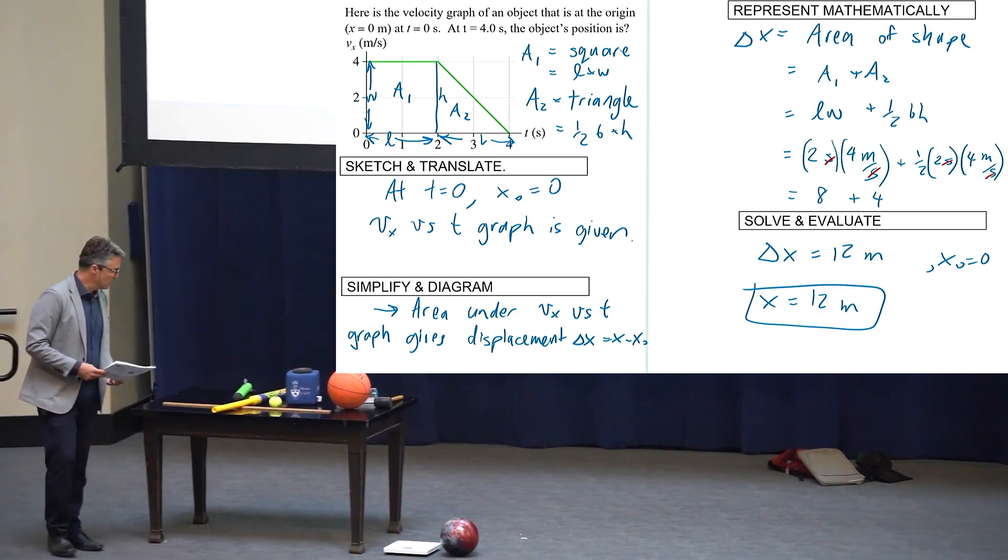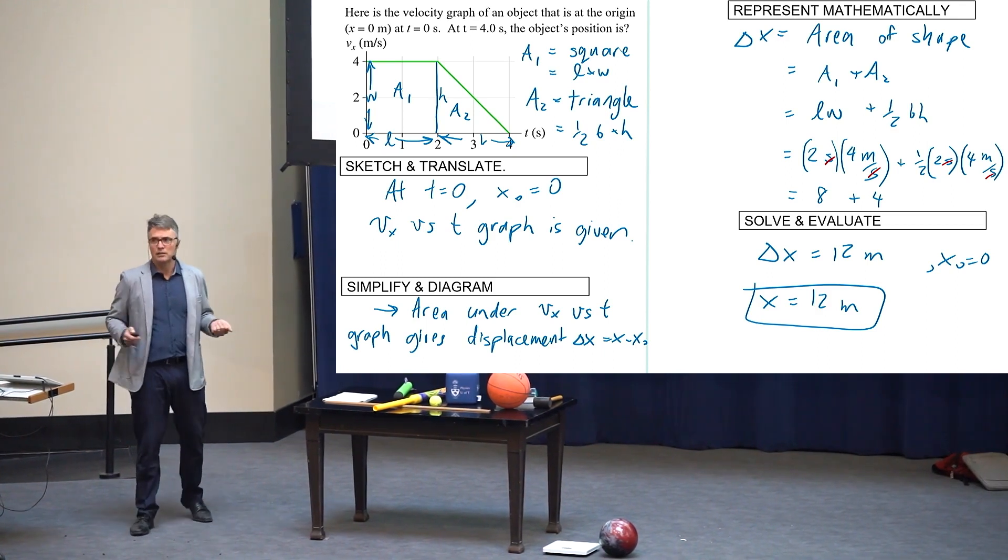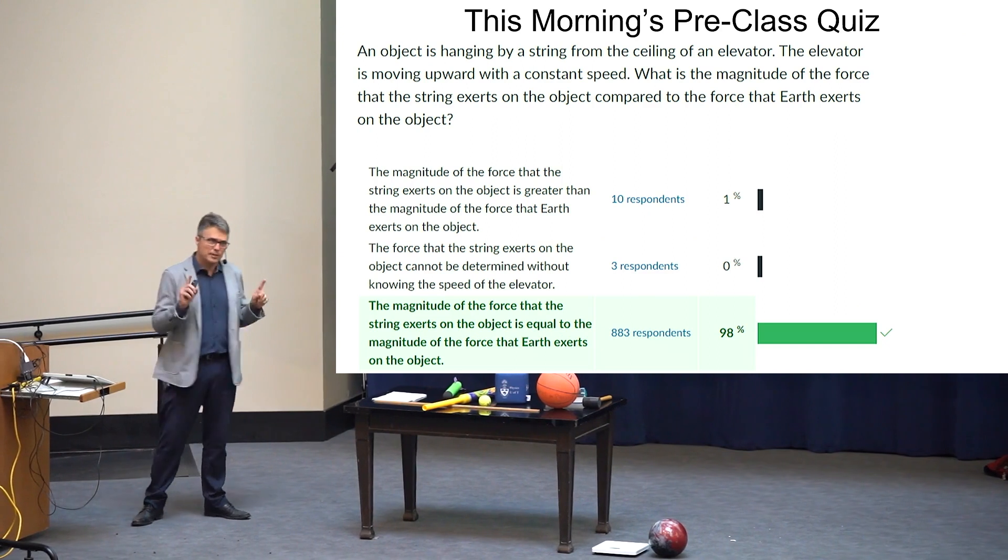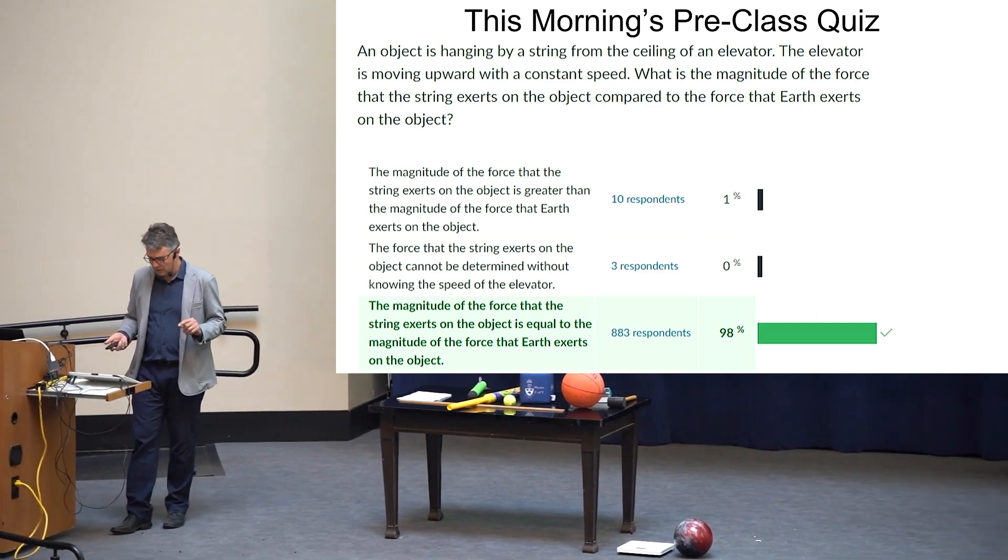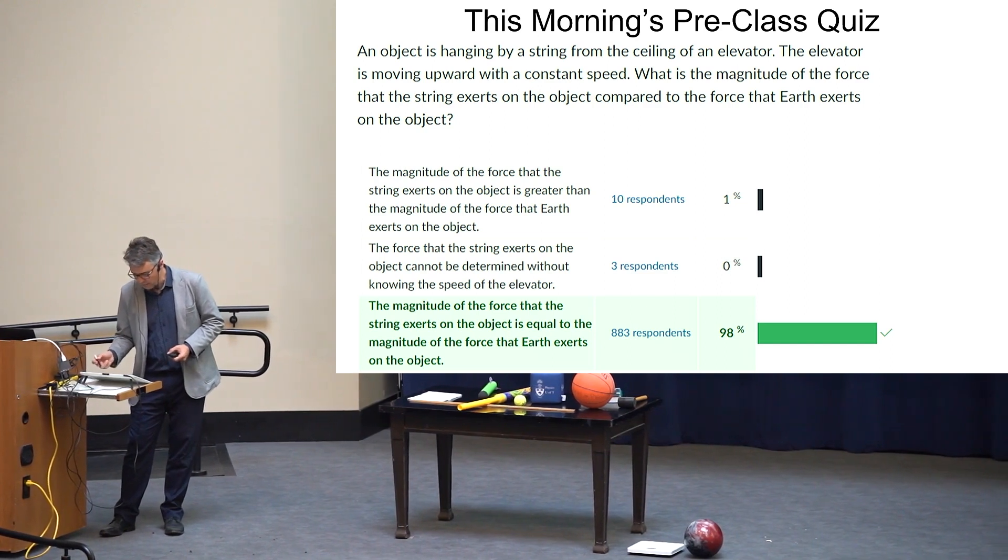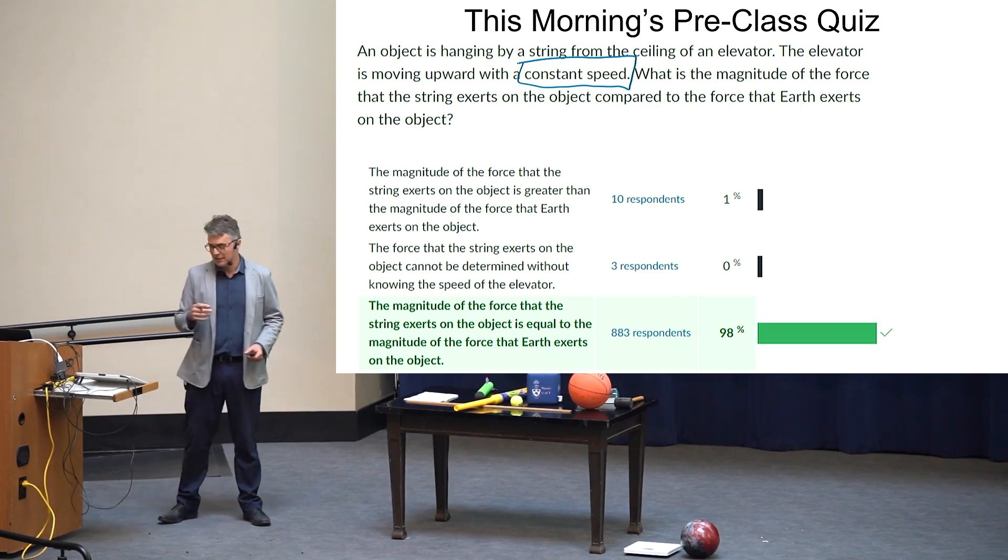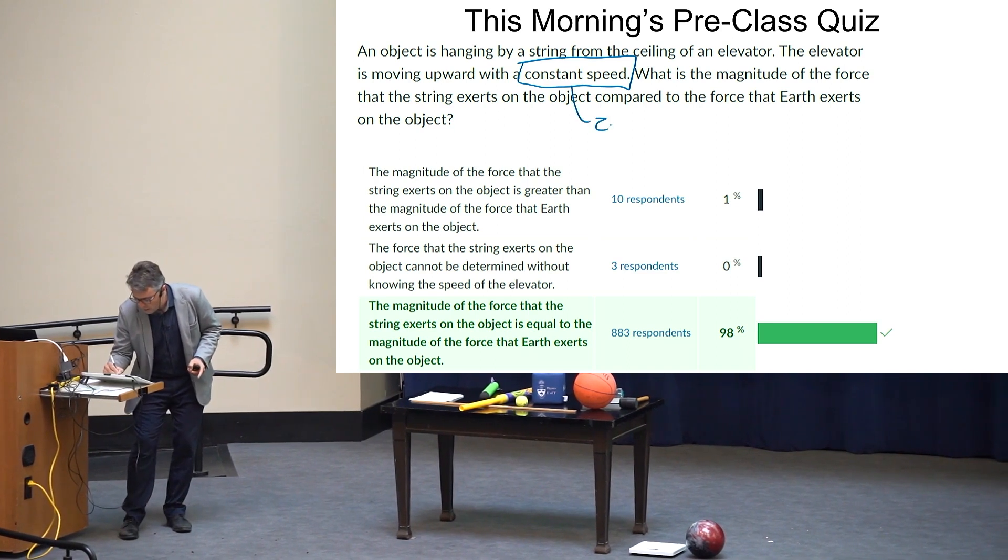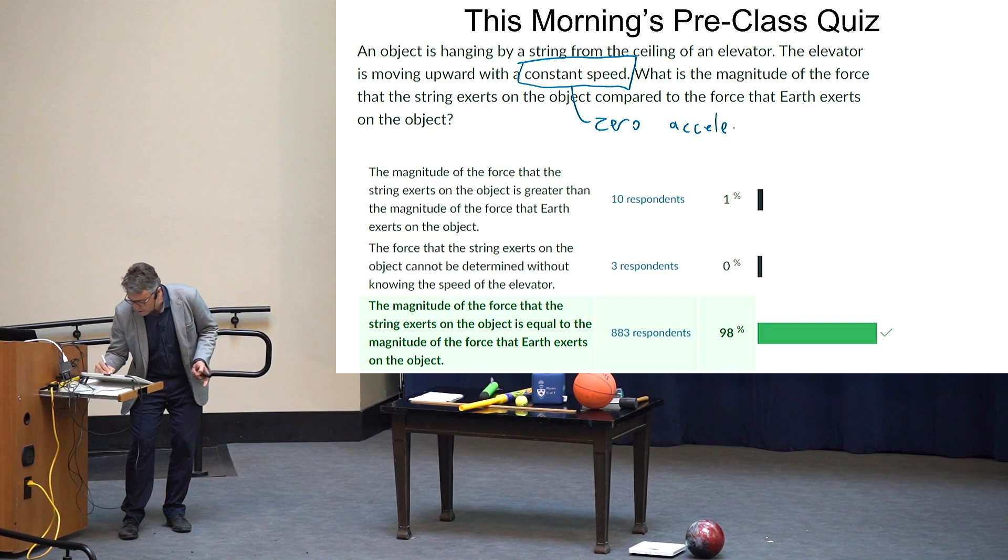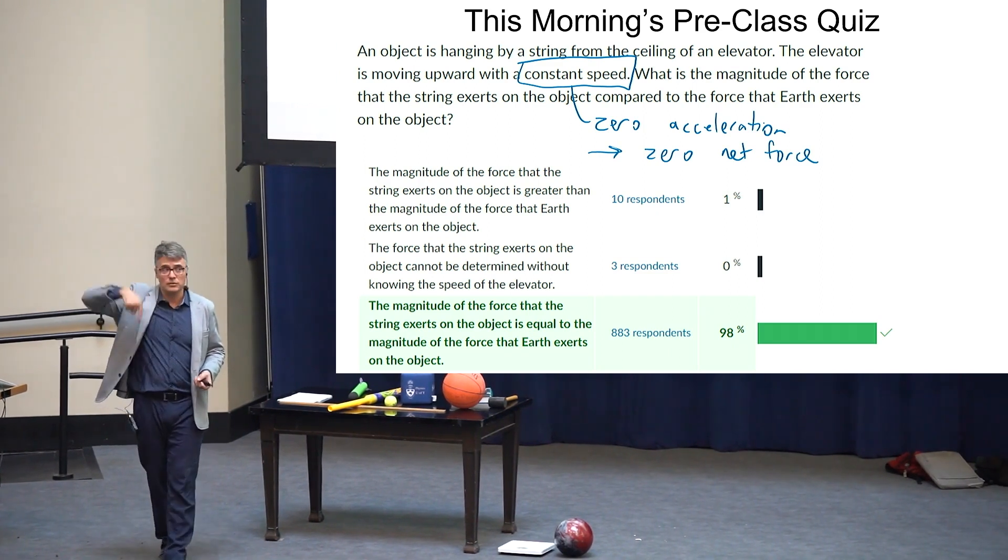This morning's quiz was just really introductory questions about chapter 3 material, which people seem to respond to like 99% correct. So an object is hanging by a string from the ceiling of an elevator. The elevator is moving upward with a constant speed. What is the magnitude of the force that the string exerts on the object compared to the force that the Earth exerts on the object?